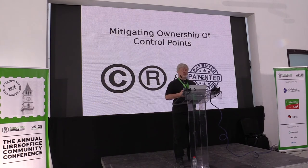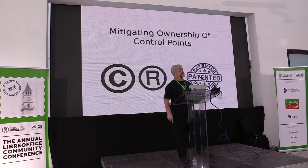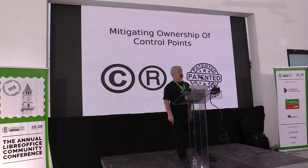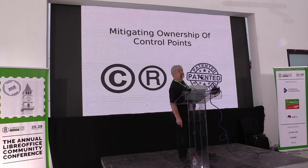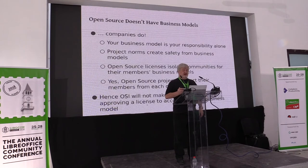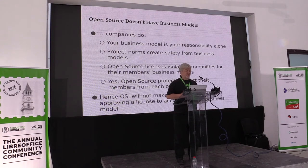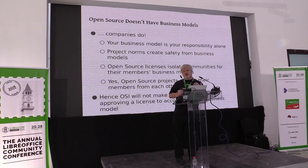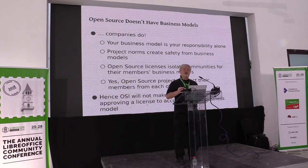By mitigating ownership control points, what I mean is an open source license gives you all the permissions you need in order to use the software and collaborate with others around it. Secondly, isolating business models — open source does not have business models; businesses do. And an open source community that classifies behavior in order to promote or defend a business model is actually a problem. An open source community has got to enable every participant to satisfy the motivation that brought them to the community.